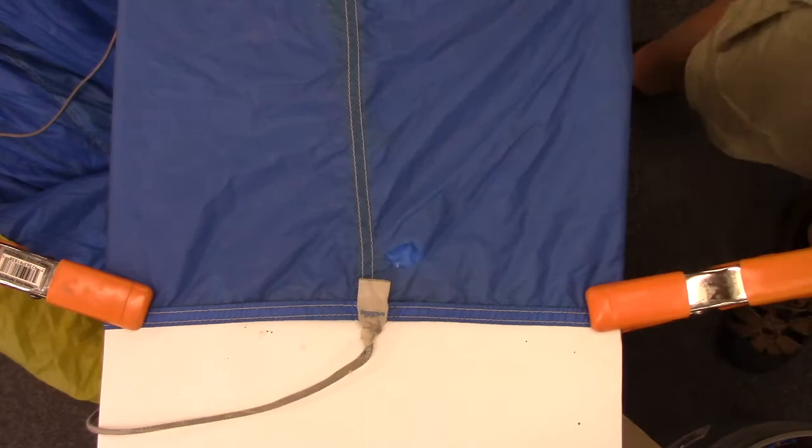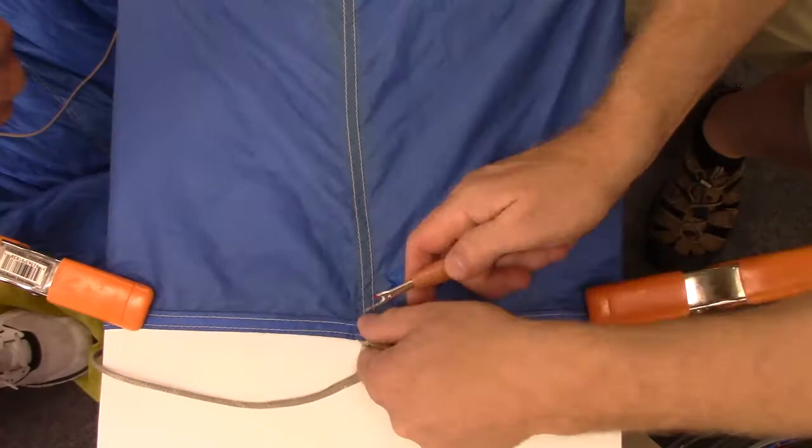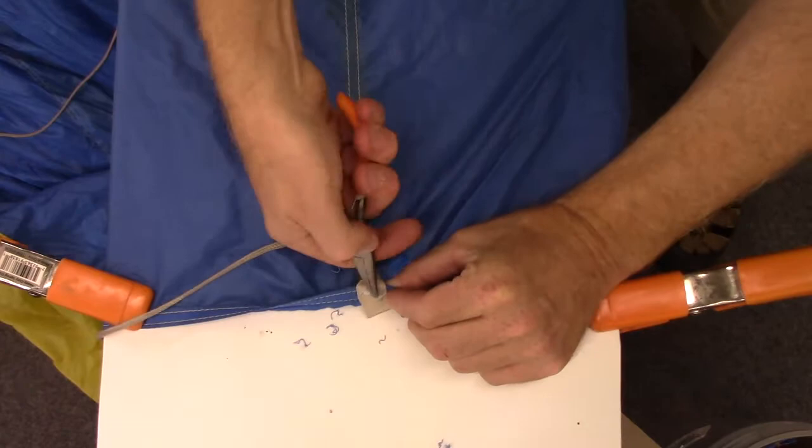So here's what we're going to be working on. You can see where the line attachment point is and I need to start removing that bar tack right off the bat. Go easy, you don't want to damage it.